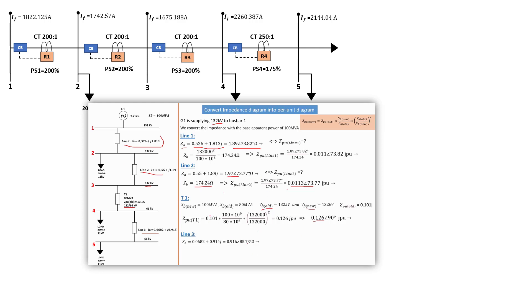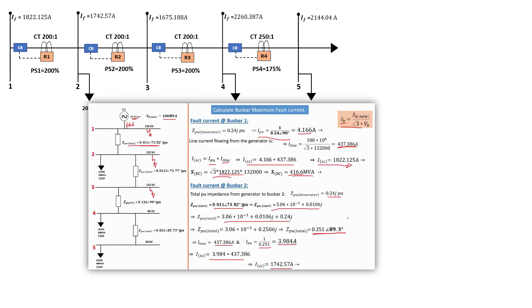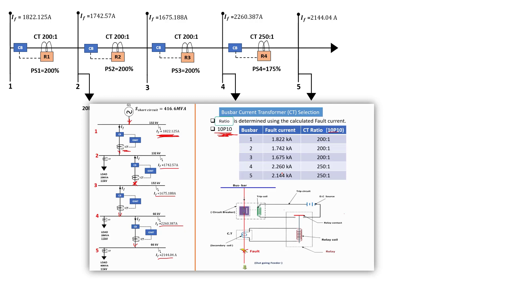You have to take the impedance diagram and convert it into a per-unit diagram — that is one of the processes you must do if you need to calculate your fault current or your per-unit current. That was tutorial three. In tutorial four we were dealing with the bus bar fault current: the maximum fault current that every bus bar is going to experience in case of a short circuit.